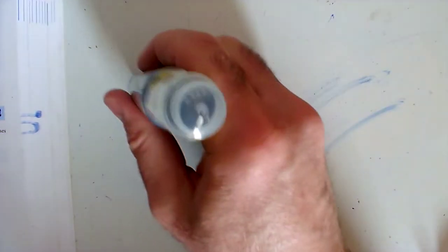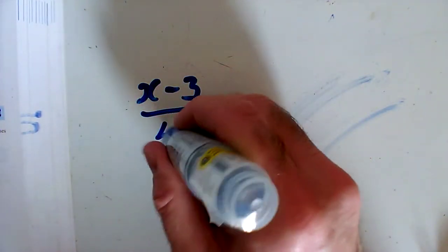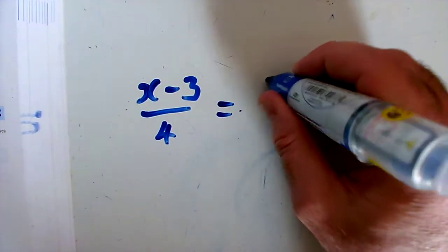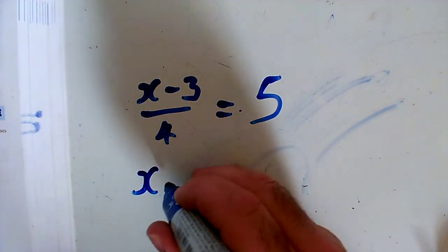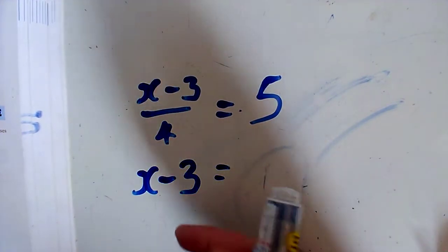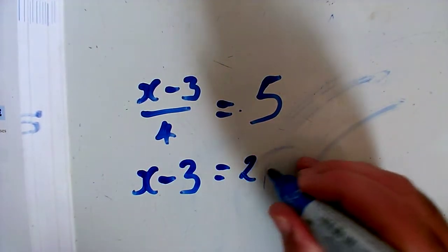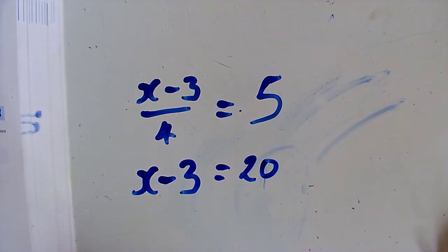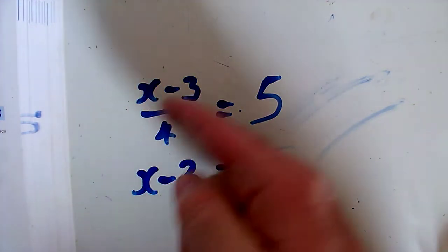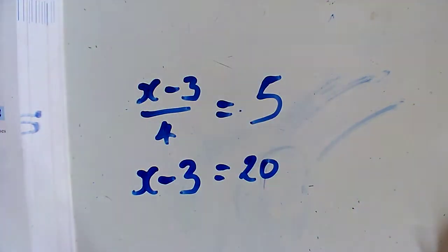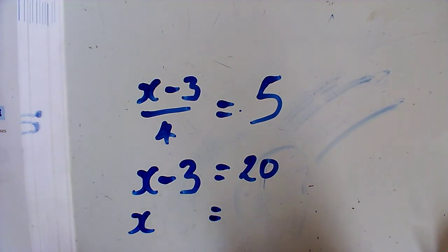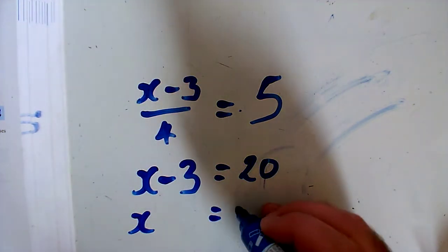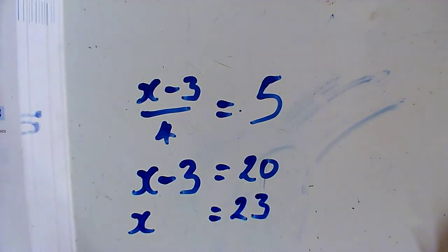Question D: x minus 3 over 4 equals 5. I'd like to get rid of the fraction by multiplying by 4, and I've got to multiply by 4 on the other side as well. So multiplying by 4 gives x minus 3 equals 20. I don't want to know what x minus 3 is, so adding 3 to both sides, x equals 23.